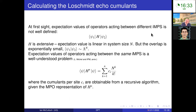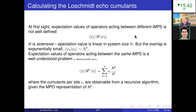At first sight, calculating expectation values of operators between different MPS seems not very well defined. If we want the expectation value of the Hamiltonian, it's linear in system size, while the overlap between two wave functions is exponentially small. In the thermodynamic limit this expectation value would seem to go to zero. However, if we calculate expectation values of operators between the same infinite MPS, this is a well-understood problem — the expectation value is a polynomial in system size with well-defined pre-factors in the large-N limit.